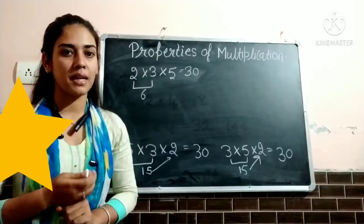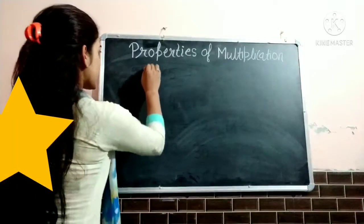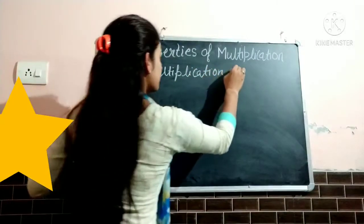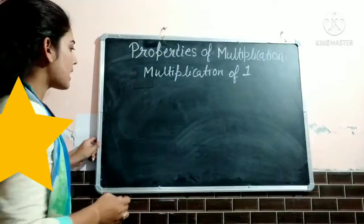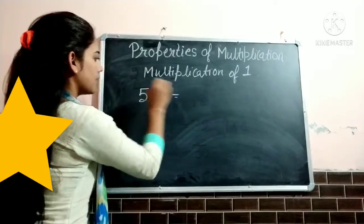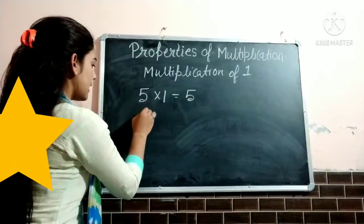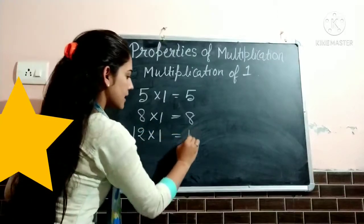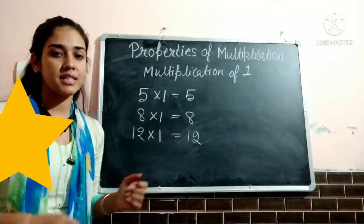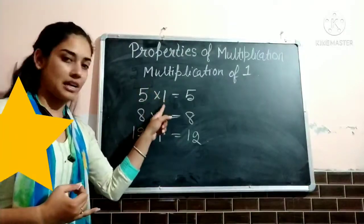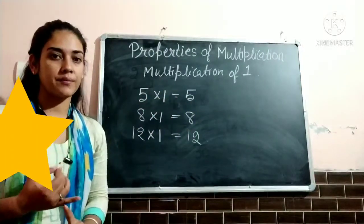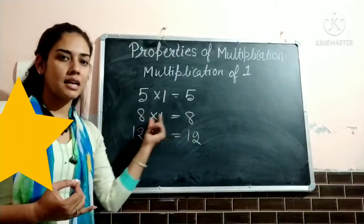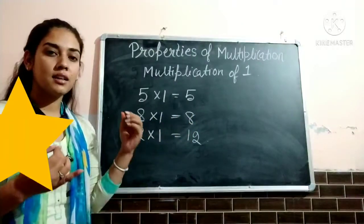Now let us discuss the next property: multiplication of 1. Let us take an example. 5 multiply 1 — the answer is 5. 8 multiply 1 — the answer is 8. 12 multiply 1 — the answer is 12. So if we multiply any number by 1, then the answer is that number itself. The number is 8 and we multiply 8 by 1 — 8 ones are 8. So the answer is that number itself.